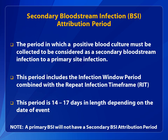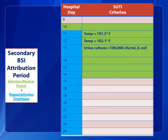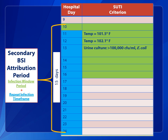The next definition is the secondary BSI attribution period. A positive blood culture must be collected during this period to be considered secondary to a primary site infection. This period includes the infection window period combined with the RIT and is 14 to 17 days in length, depending on the date of event. Note that a primary BSI does not have a secondary BSI attribution period. Returning to the SUTI example, the secondary BSI attribution period encompasses both the infection window period and the RIT — in this example, the BSI attribution period is 15 days in length. The length of the secondary BSI attribution period depends upon the date of event and is never greater than 17 days.